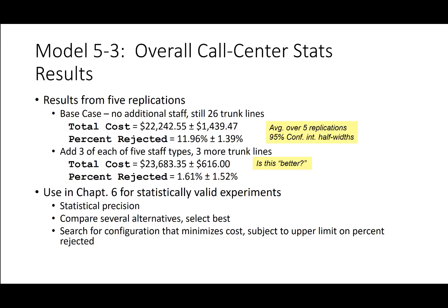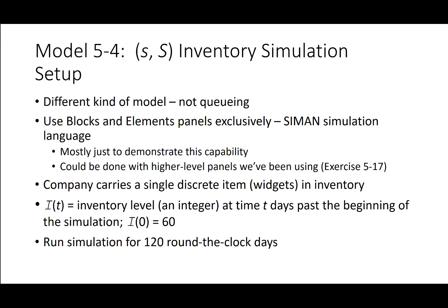Chapter 6 goes into more detail about statistically valid experiments for precision and different alternatives, which we won't cover here. Now let's look at Model 5.4 for the inventory simulation setup. This is a different kind of model — not queuing — using blocks and elements panels exclusively in the SIMAN simulation language, primarily to demonstrate this capability, though it could also be done with higher-level panels.